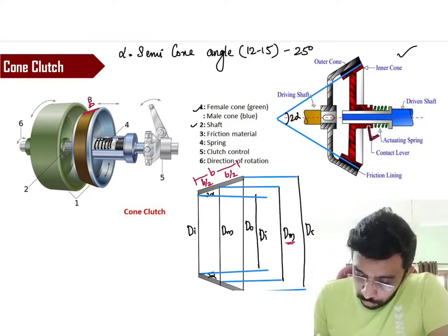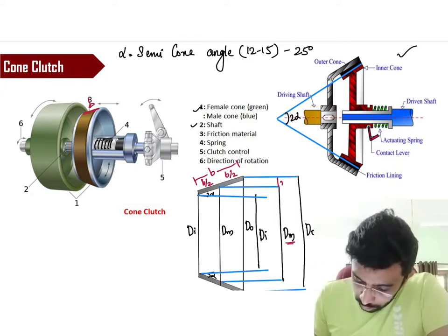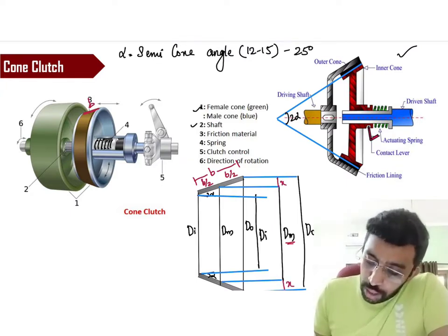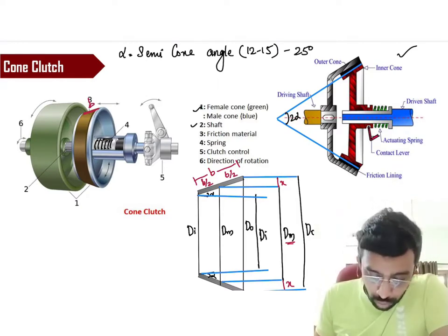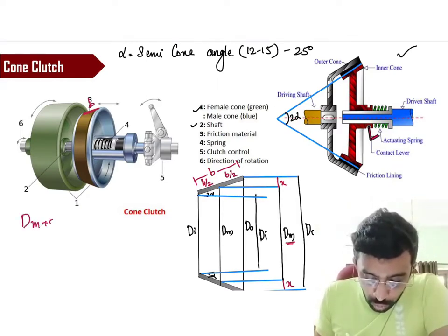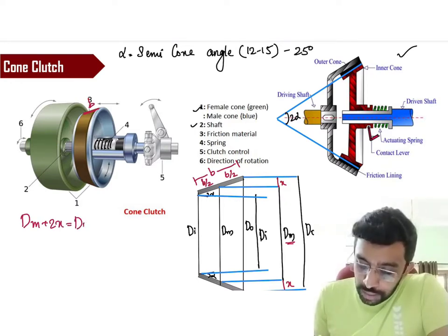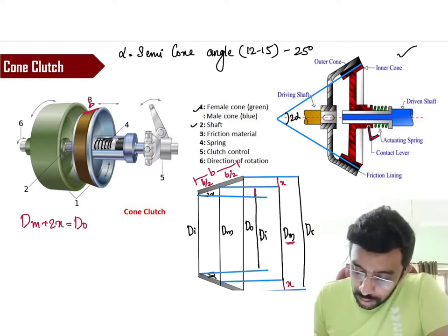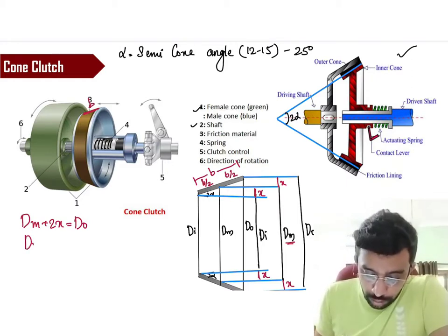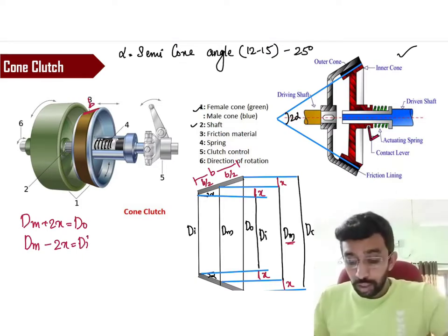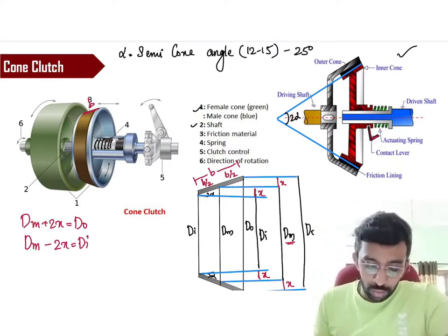Now, if you look here, we can say that if you know the value of dm, how can we find the value of d_in and d_out? To understand that, you should know the width of the brake lining. That means this width that is being called as b. If that is b, this has to be b/2, and this has to be b/2. Now, let's say like this. From the dm, if I add some x here and an x here, definitely, we will say that dm plus 2x is going to get the value of d_out. Similarly, if I subtract this x and this x from dm, I'm going to get the value of d_inner.